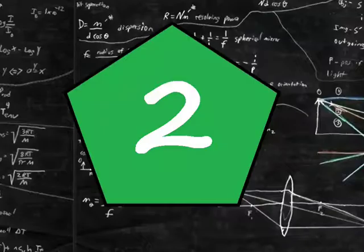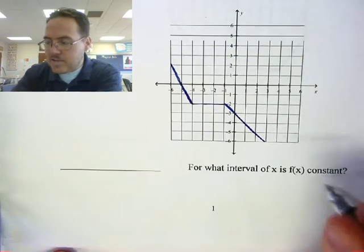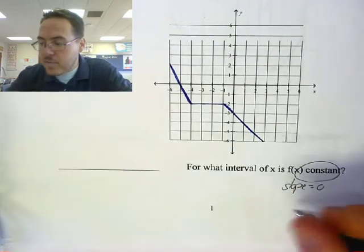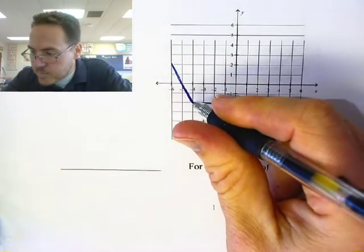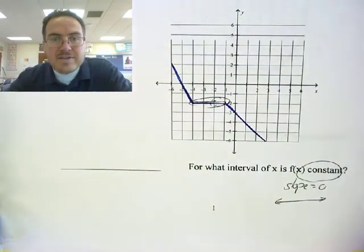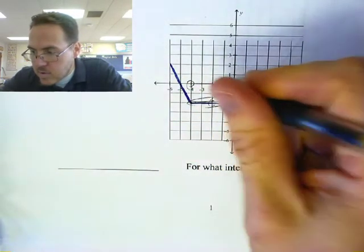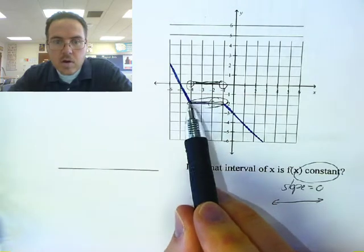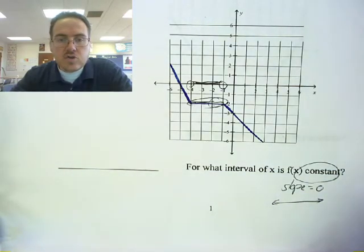Let's take a look at number two. For what interval of x — so where on the x-axis would I be looking — where f of x is constant? The condition is constant, which means the slope is zero or it's going to be flat, just going sideways. I think we can all see it's right here — there's that flat constant part. The x values are here to here, so that's the region of the x-axis where our function, our y values, are constant.